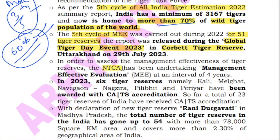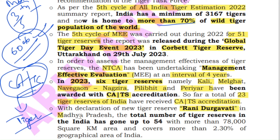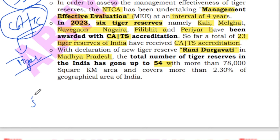The National Tiger Conservation Authority (NTCA) is a statutory body established under the Wildlife Protection Act of 1972 under the Ministry of Environment, Forest and Climate Change. It undertakes management effectiveness evaluation (ME) of tiger reserves at intervals of four years. In 2023, six tiger reserves — Kali, Melghat, Navegaon-Nagzira, Pilibhit and Periyar — were awarded CA|TS accreditation. So far, 23 tiger reserves have received CA|TS accreditation. Rani Durgavati Tiger Reserve in Madhya Pradesh is recognised as India's 54th tiger reserve, and the 55th is Dholpur-Karauli Tiger Reserve in Rajasthan.